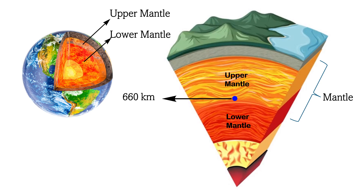Moving on to the lower mantle — this is the deep part of the Earth beneath the upper mantle, approximately 2,900 kilometers deep, just above the outer core. It stores a lot of heat and material. This layer affects how the inside of the Earth behaves and how tectonic plates move on the surface. The movement and heat within the lower mantle help drive the flow of material and heat throughout the Earth, maintaining the planet's overall heat balance. The lower mantle plays a key role in keeping the Earth's internal processes running smoothly.